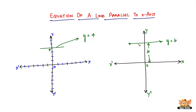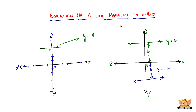But what if the same line were on the negative side of the y-axis? In that case, with the distance being B, the equation would be Y equals negative B. I hope you understood how to find the equation of a line parallel to the x-axis. That concludes this video — I'll see you in the next video with the equation of a line parallel to the y-axis.